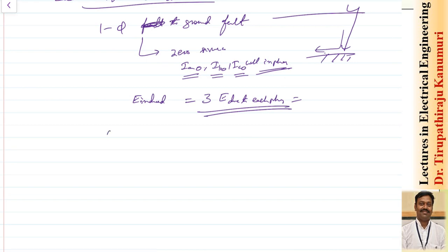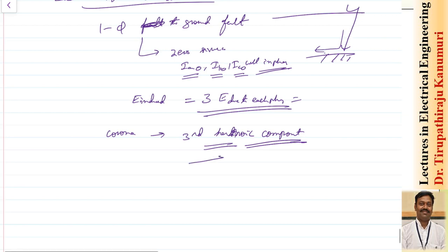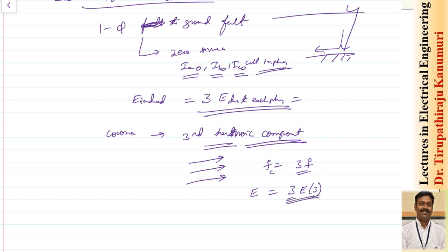There is also the corona effect, which induces third harmonic components in the current. These triple-N harmonic currents are also all in phase with each other, and their frequency is three times the fundamental frequency. Therefore, the induced EMF is three times the EMF per phase, and with the frequency also tripled, the total effect becomes nearly nine times the EMF per phase — making this effect very severe.